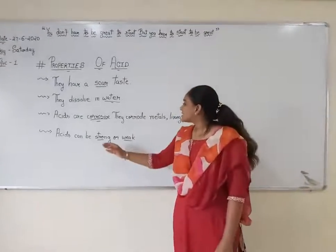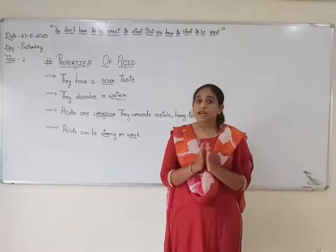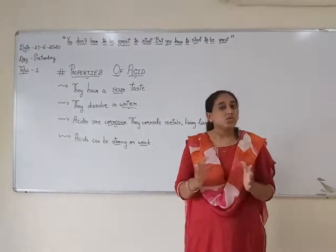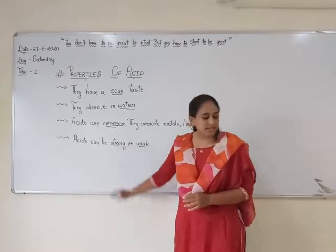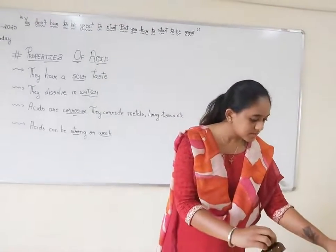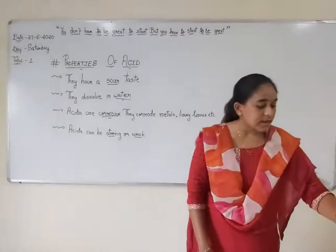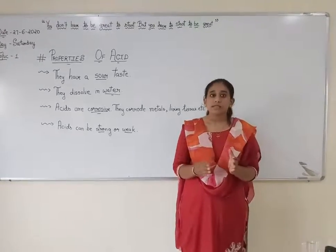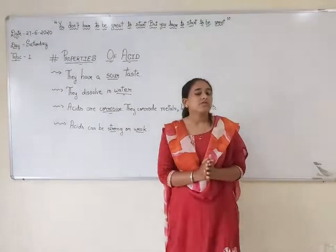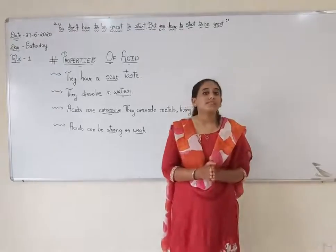Coming to the last property of acid: acids can be strong or weak. When acids dissolve in water, the H⁺ ions get dissociated. If the H⁺ ion is completely dissociated, we call it a strong acid. Examples are nitric acid, hydrochloric acid, and sulphuric acid. Similarly, when an acid dissolves in water and the H⁺ ion is only partially dissociated, we call it a weak acid. Acetic acid, citric acid, and tartaric acid are a few examples of weak acids.